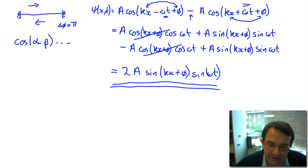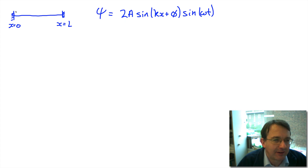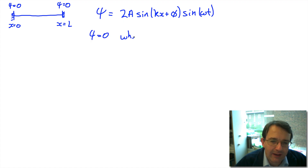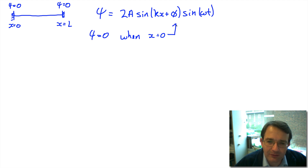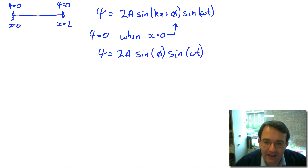Now we need to apply our boundary conditions. We have a boundary at x = 0, so the displacement must be zero when x = 0. Substituting x = 0 into our expression gives ψ = 2a times sine(φ) times sine(ωt). For this to equal zero for any value of time t, the sine of φ must be zero.